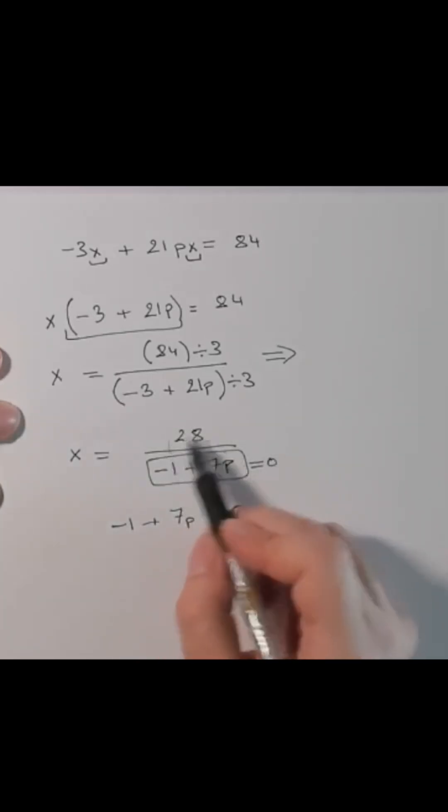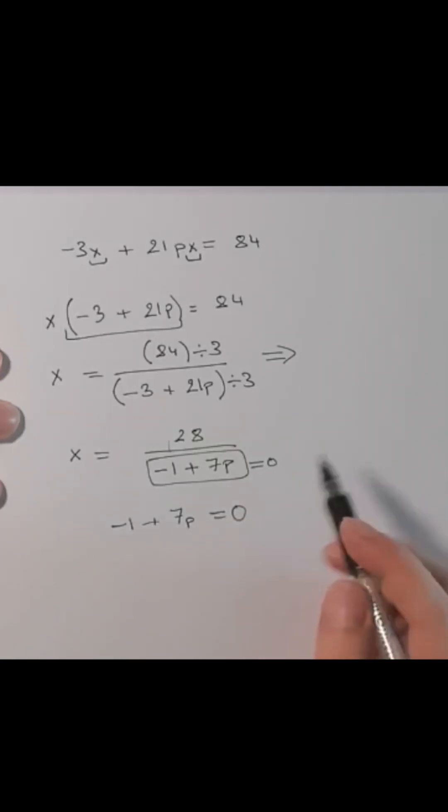Why? Because this fraction, 28 divided by 0, is undefined. So this will make the whole equation a false equation.